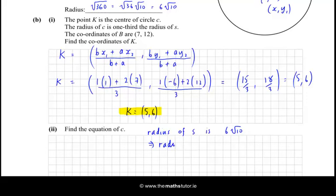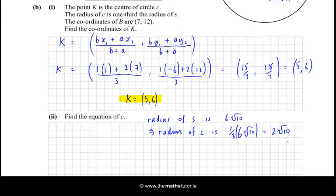Therefore, the radius of C is one-third of that, which is 2√10. So now we can write the equation in the same format as we did before. So that'd be (x - 5)² + (y - 6)² is equal to our radius squared, which would be 4 times 10, which is 40. And that is the equation of C.